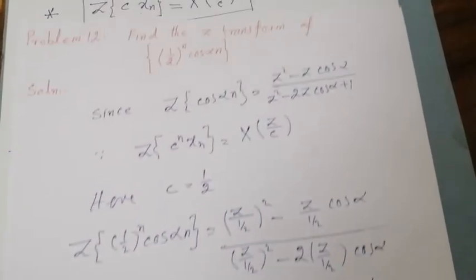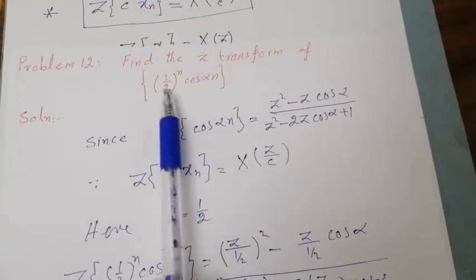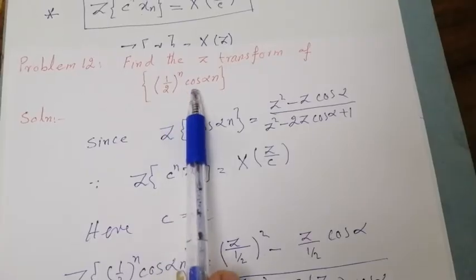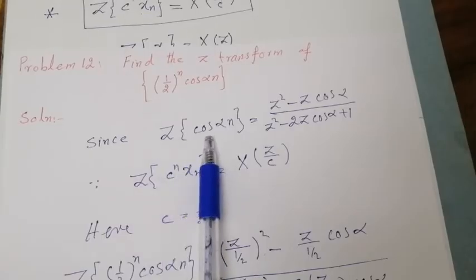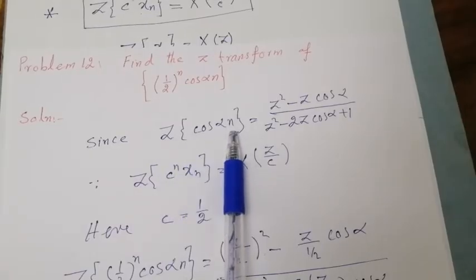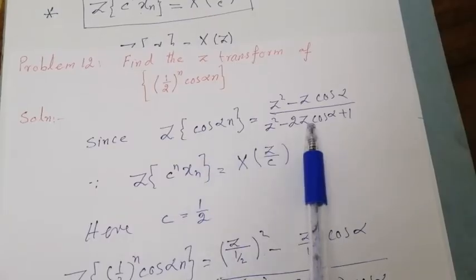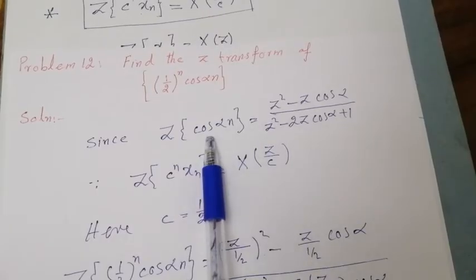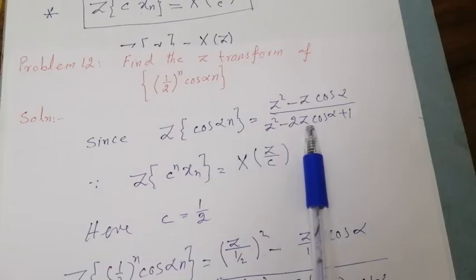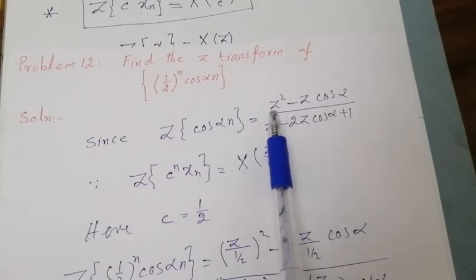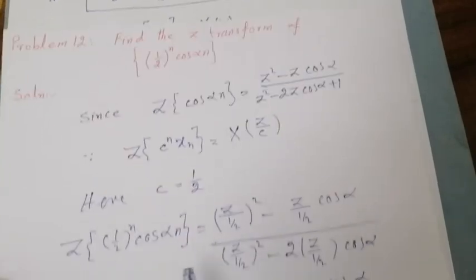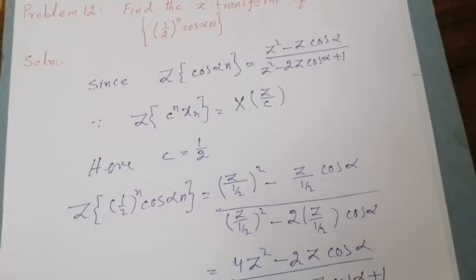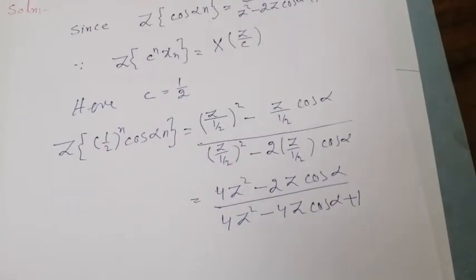This is the required solution. To summarize: to obtain the Z transform of (1/2)^n · cos(αn), first obtain the Z transform of cos(αn). If you forget the formula, use the definition. Then in the solution, replace Z by Z/(1/2) and after simplification you will get the answer.